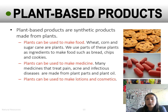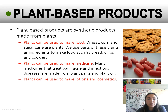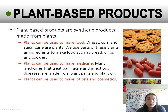On this portion of your guided notes where it says plant-based products, you only need to provide one example — there are three here for you. Plant-based products are synthetic products made from plants. Plants can be used to make food — things like wheat, corn, and sugar cane are used as ingredients to make foods such as bread, chips, and cookies. Plants can be used to make medicine, treating pain, acne, and infectious diseases. Plants can also be used to make lotions and cosmetics.